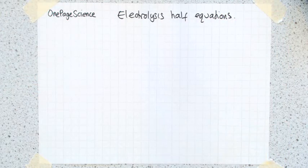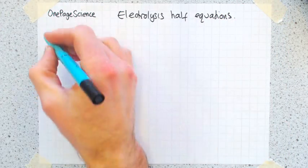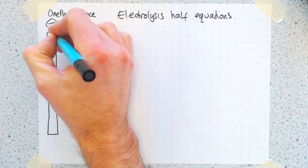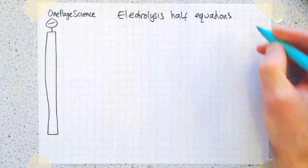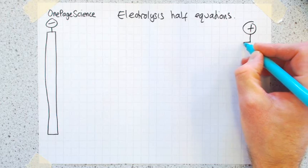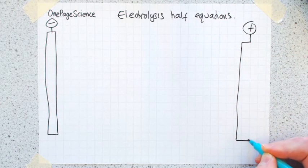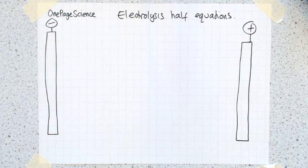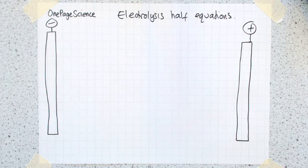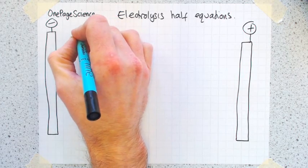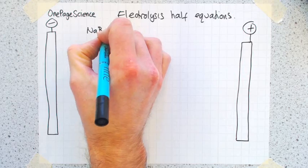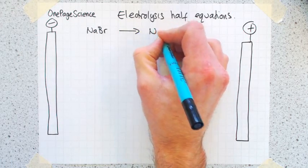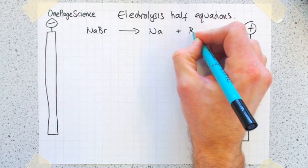So I want you to imagine that this whole piece of paper is an electrolysis cell. On one side we've got our negative electrode, and on the other side we've got our positive electrode. So two electrodes, usually made of graphite, stuck into a beaker, and then we're going to consider this chemical reaction which is sodium bromide reacting to form sodium and bromine.